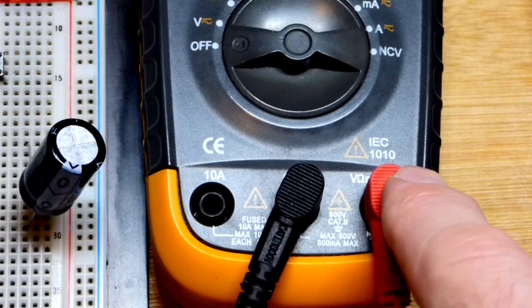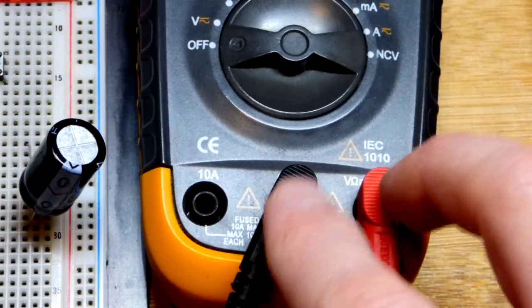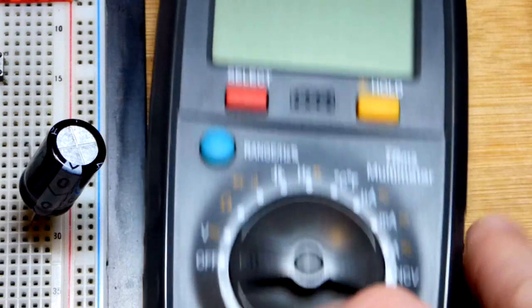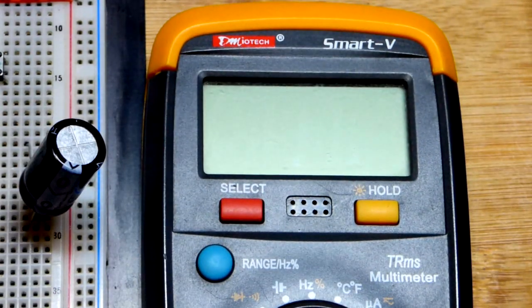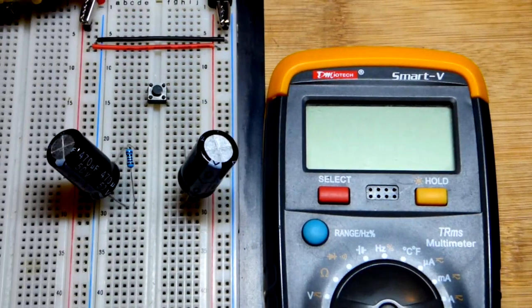This particular meter, red probe and black probe stay where they are. You may have to move one or the other with a different multimeter, so you'll always check with that. This one's pretty simple here.